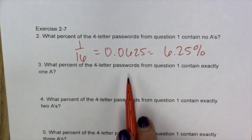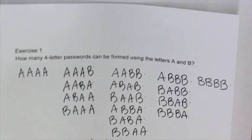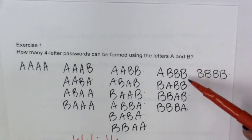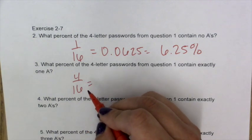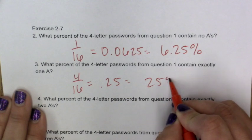3. What percent of the four letter passwords from Question 1 contain exactly one A? We have a column for that as well. If we go back to our list, this column has exactly one A, so 1, 2, 3, 4 out of 16, which when we divide is 0.25 or 25%.